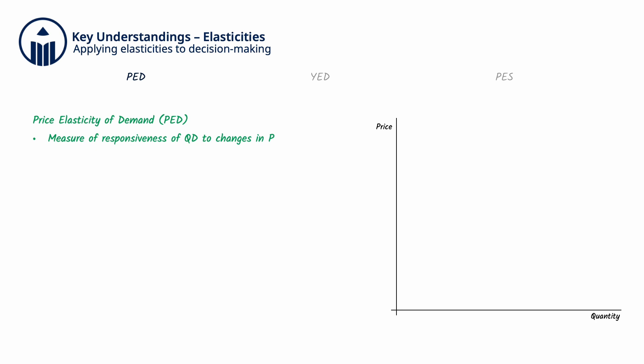The formula for calculating it is percentage change in QD divided by percentage change in P.